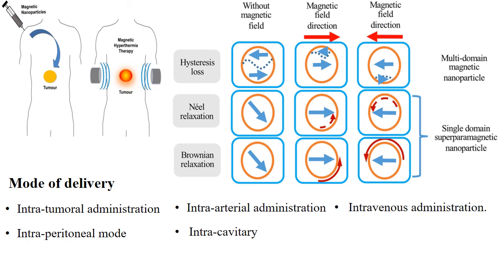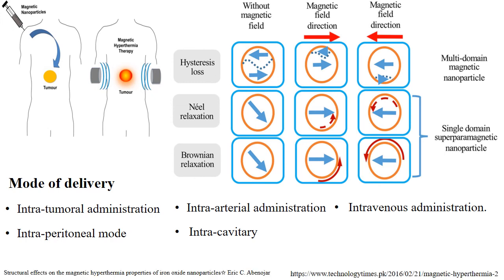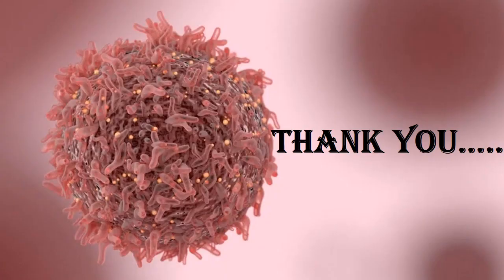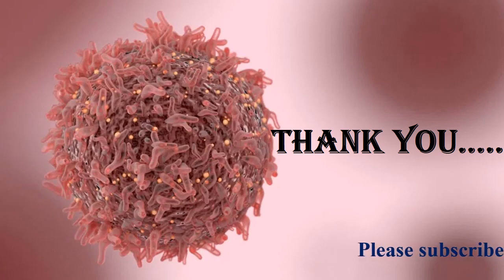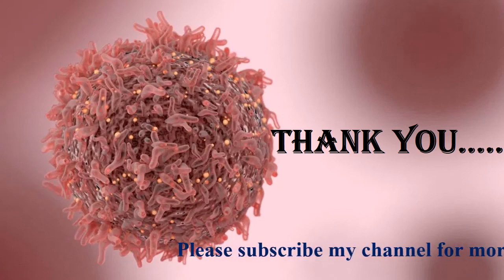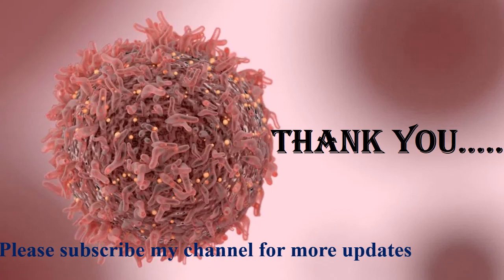These are some different modes of administration of nanoparticles to the tumor sites. That's all about the basics of how magnetic nanoparticles generate heat and how that heat can induce tumor cell death. Thank you for watching this video. If you like this tutorial, please share it with your friends and contacts. Thank you.